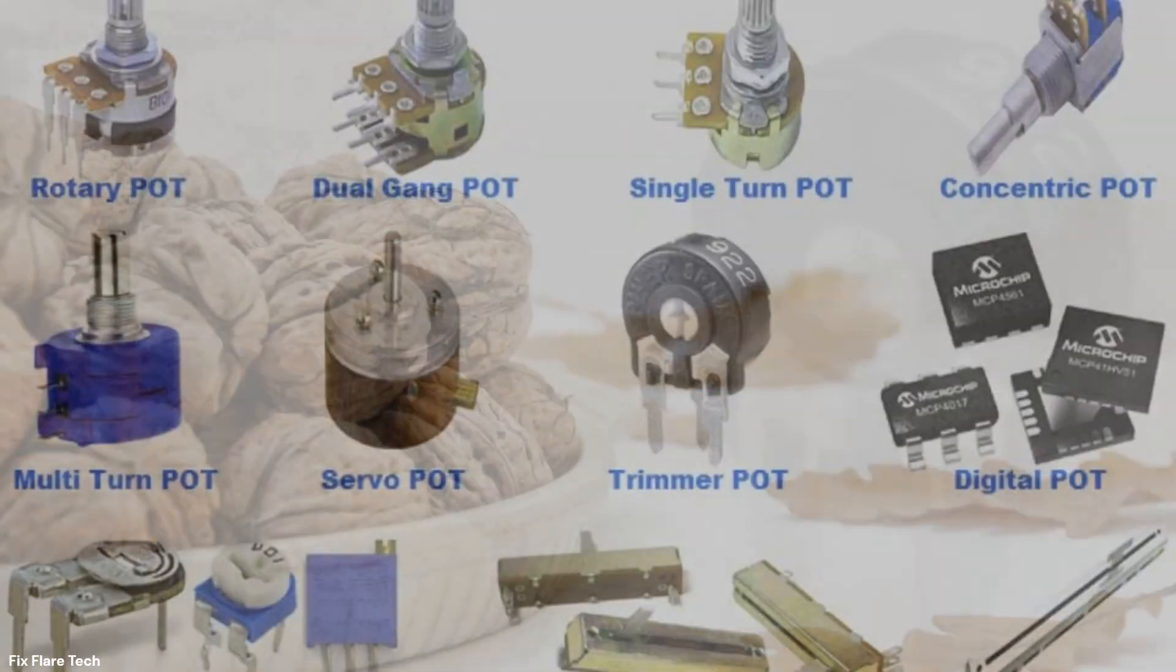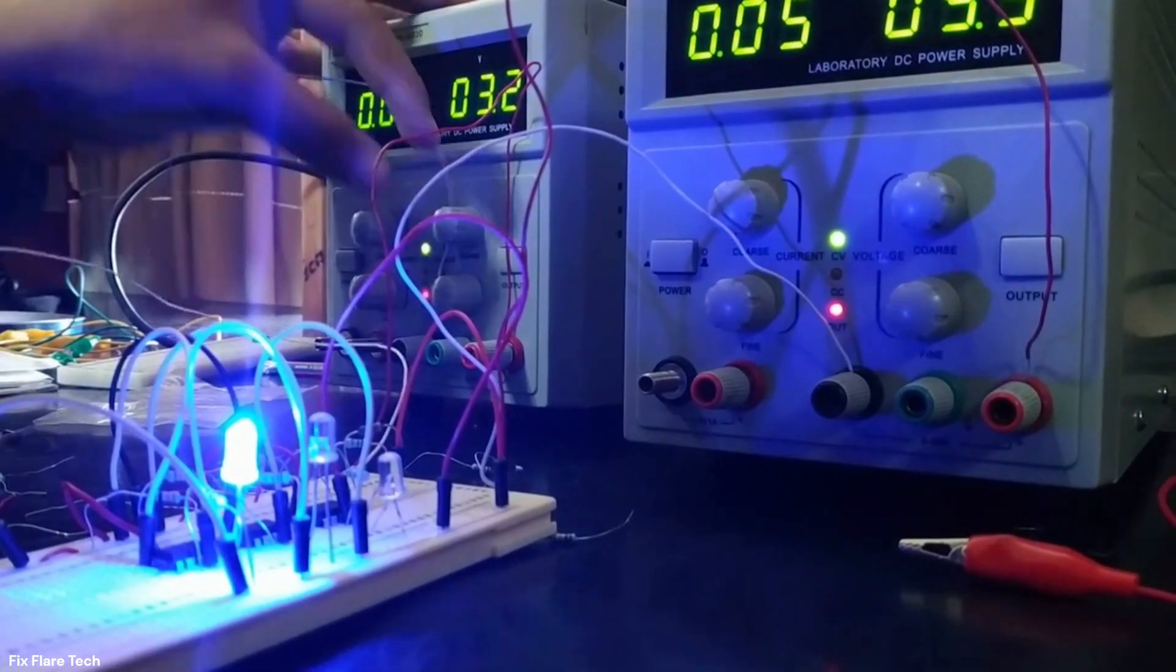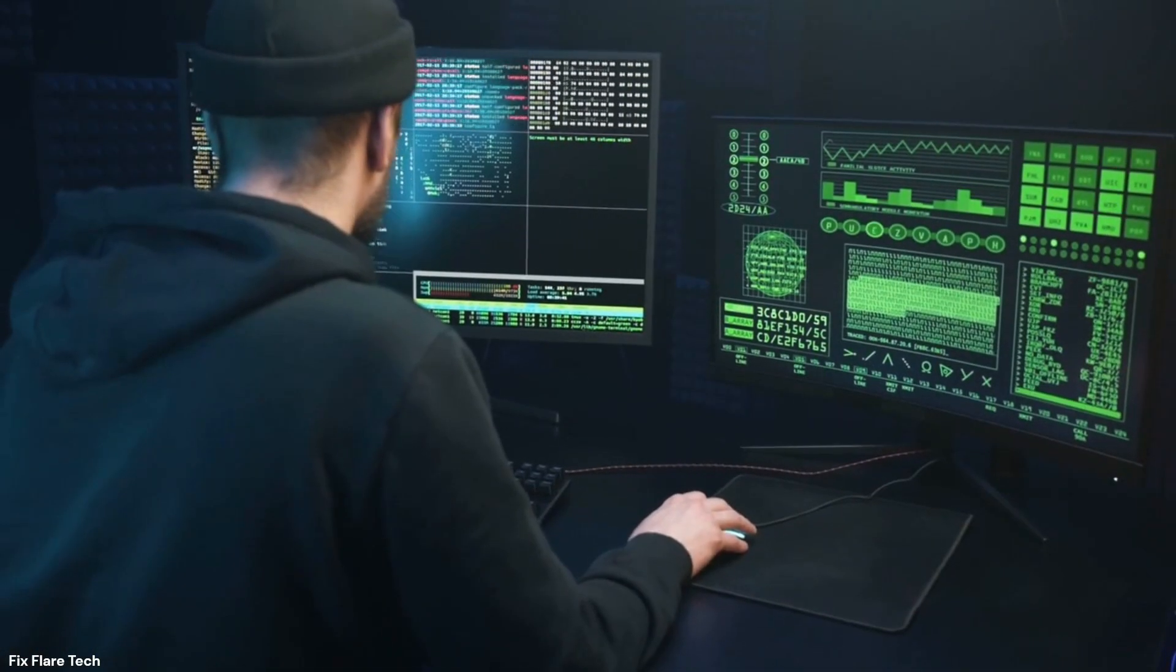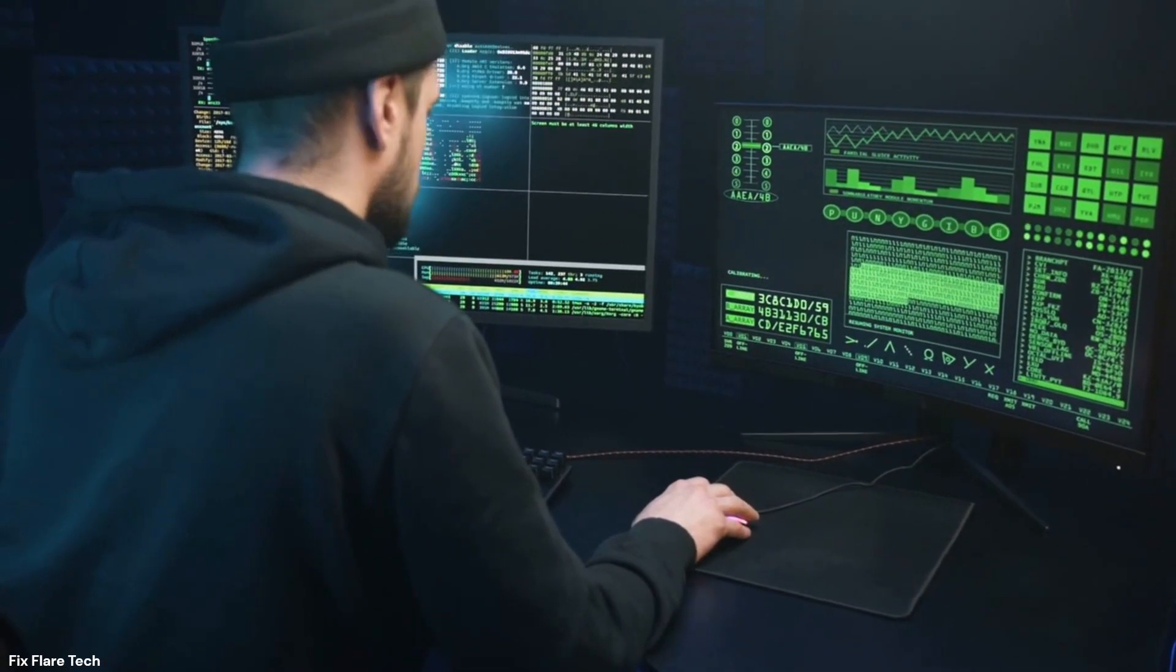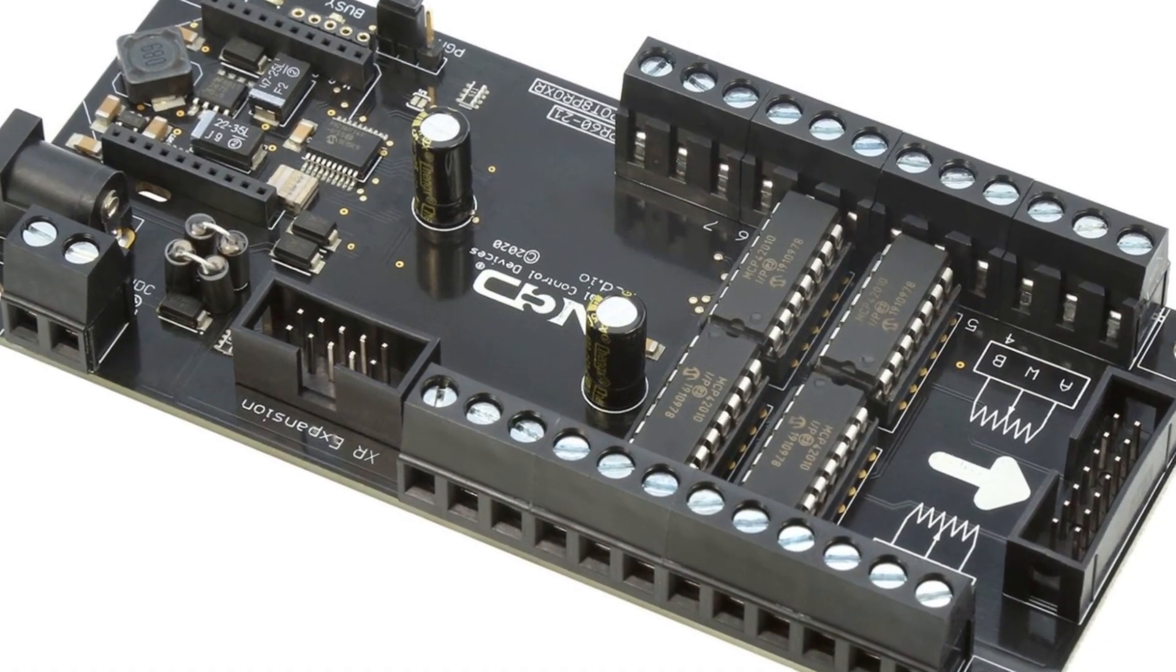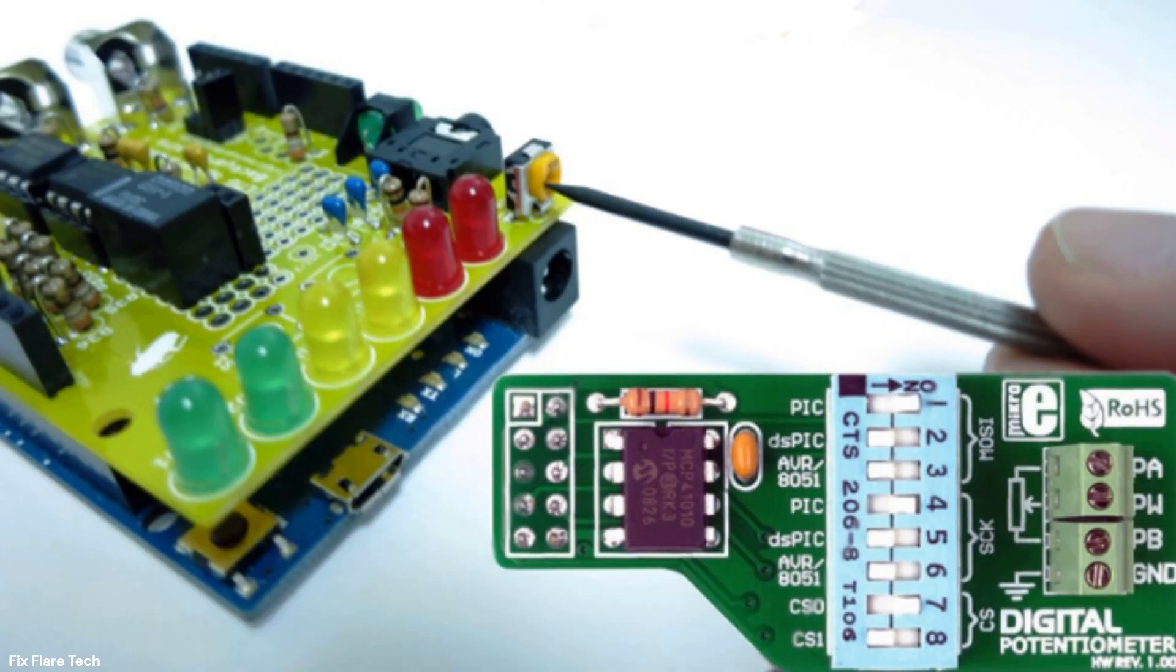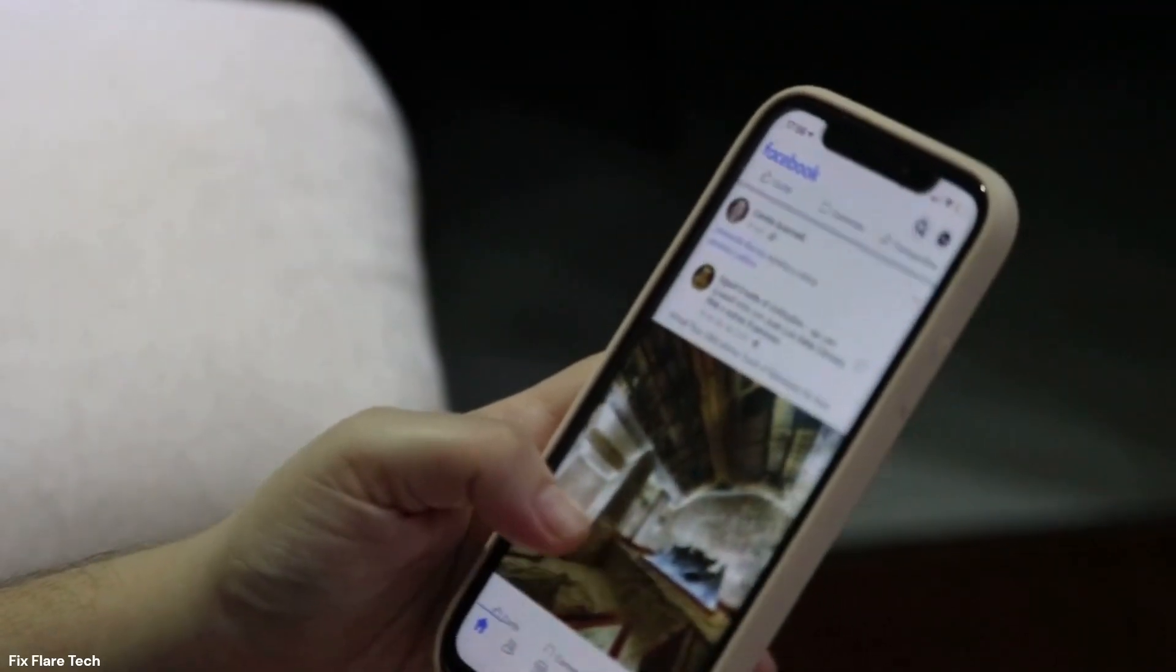So, in a nutshell, the world of digital potentiometers is fascinating, isn't it? These ingenious devices control voltage with precision, all the while operating in the realm of binary code. Their functionality extends to myriad applications, from regulating the volume on your stereo to controlling the brightness of your LCD screen. Just imagine, all this intricate work is performed by the humble digital potentiometer. Next time you adjust the volume on your stereo or look at your LCD screen, remember the humble digital potentiometer working behind the scenes. Until next time, keep exploring the world of electronics.